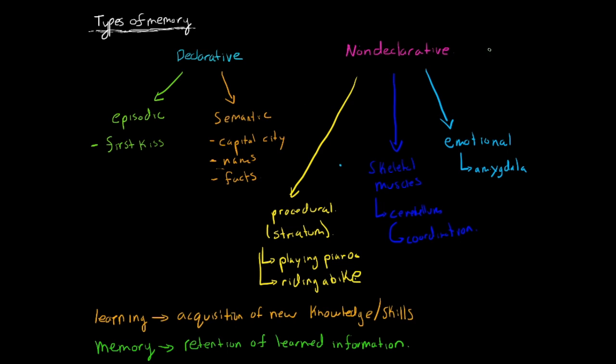We sometimes call non-declarative memory implicit memory. Implicit memory because it kind of results from direct experience, whereas declarative memory is called explicit. And that's because it results from more of a conscious effort to remember something.